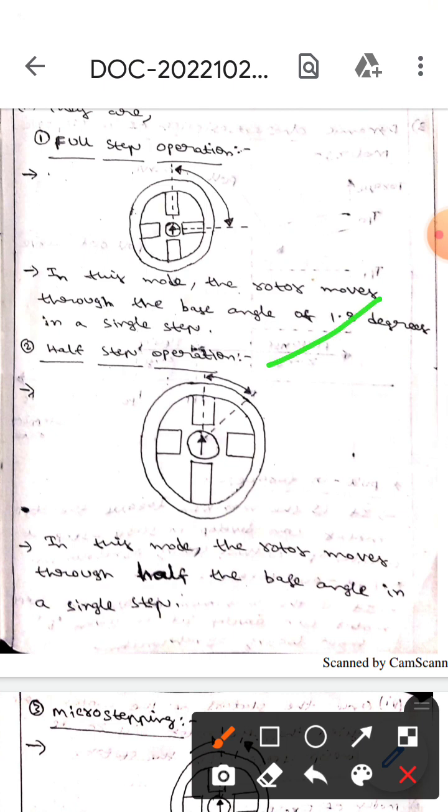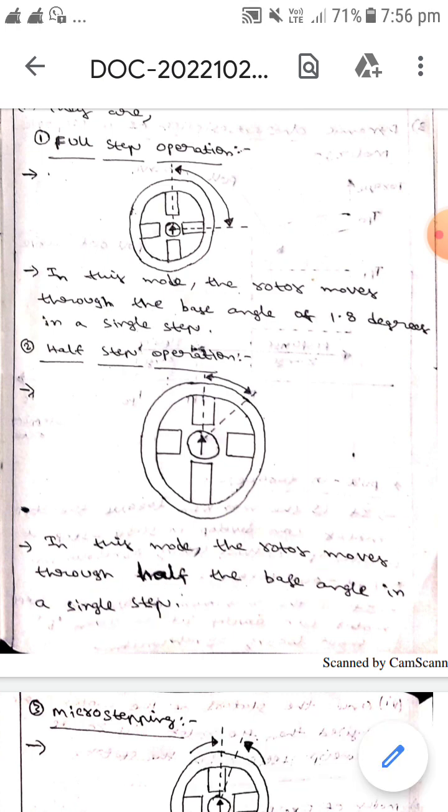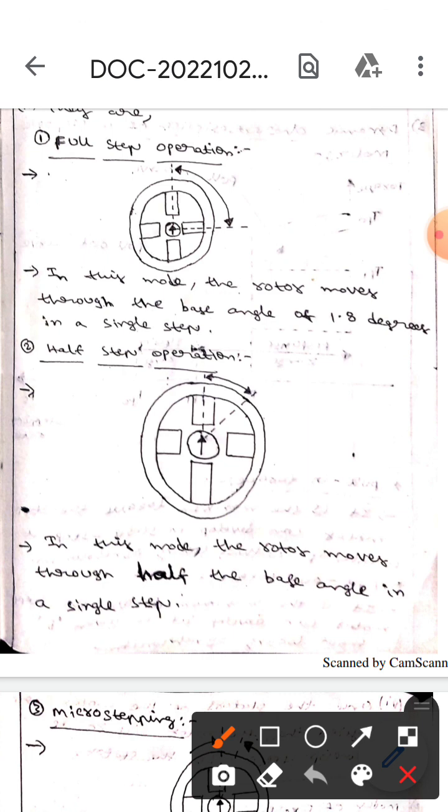Now the half step operation. This diagram represents the half step operation. In this mode, the rotor moves through half of the base angle in a single step.